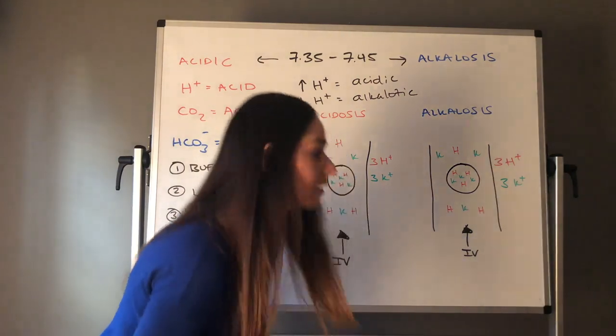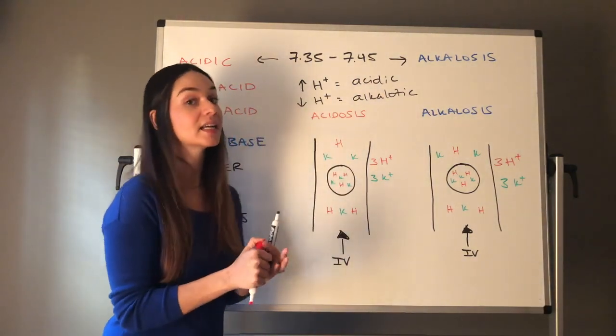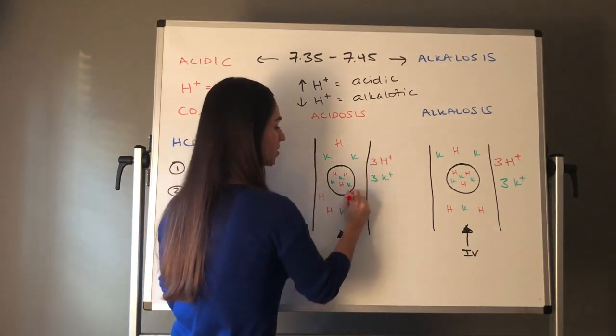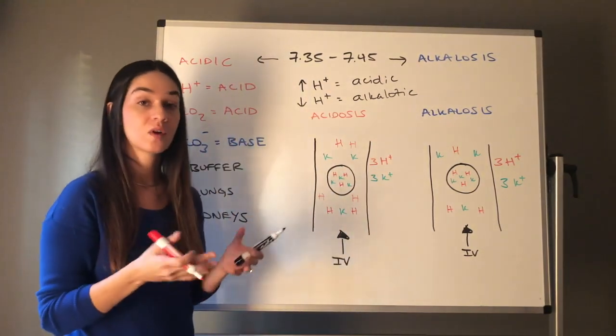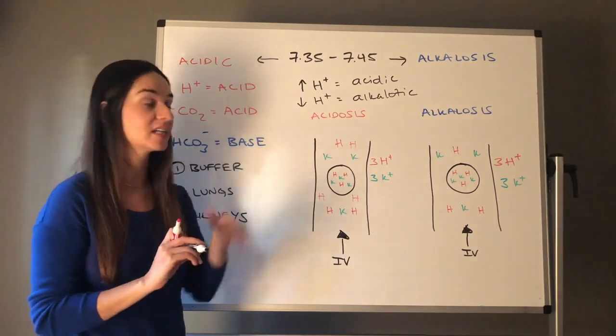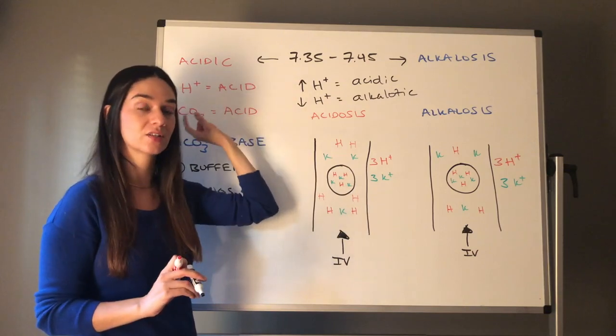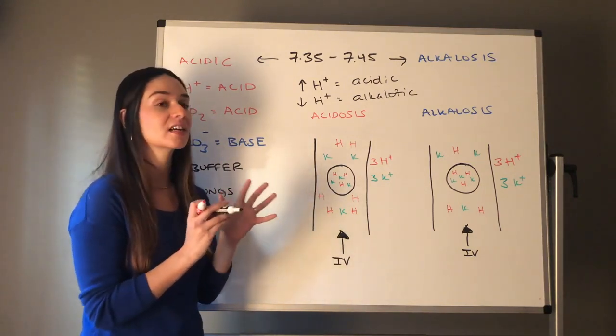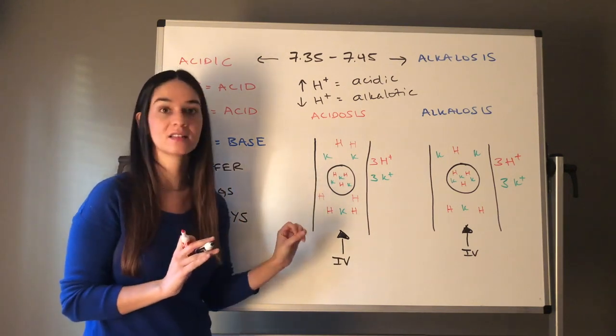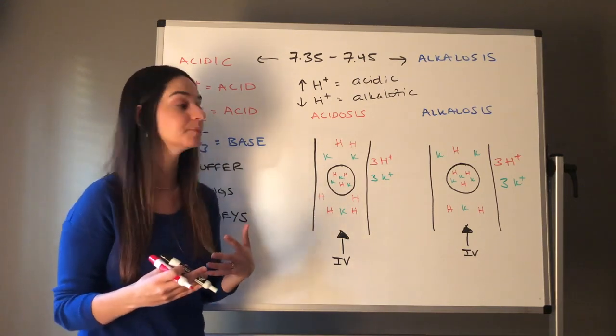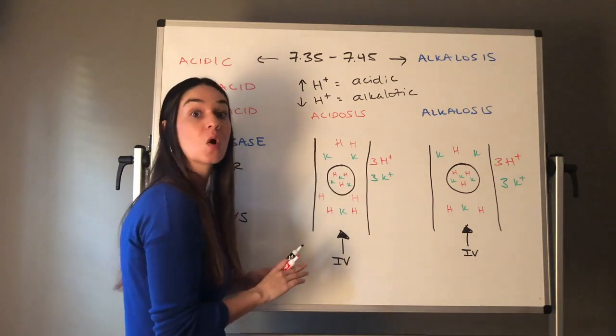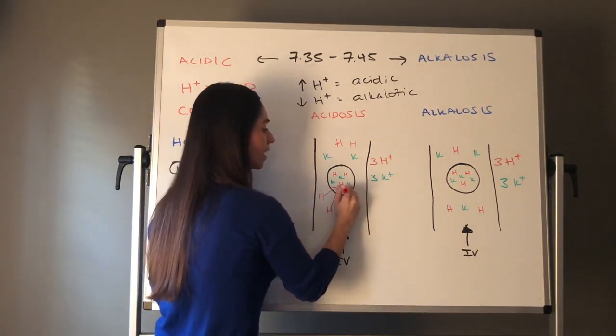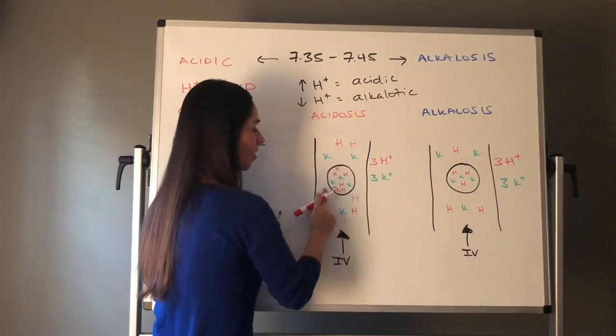Acid starts to build up. Remember, hydrogen ion is an acid. So acid starts to build up. Instead of my three hydrogen ion in my blood, I now have six. The more hydrogen ion you have, the more acidic your pH becomes. So with three additional hydrogen ion, my pH is going to start to decrease.